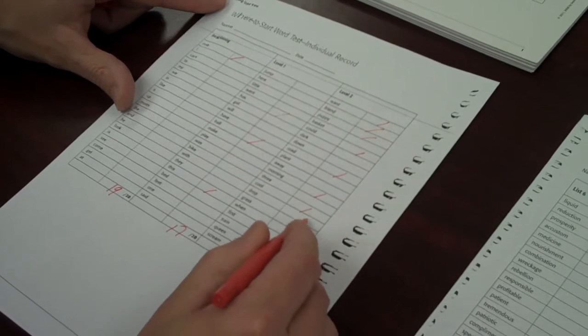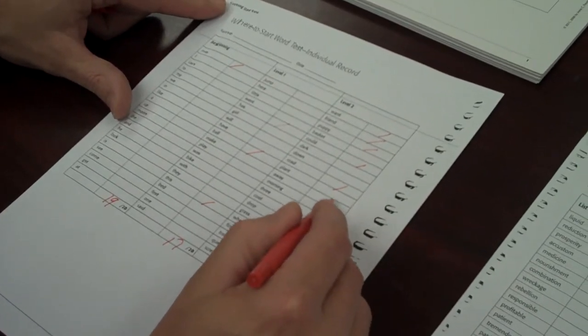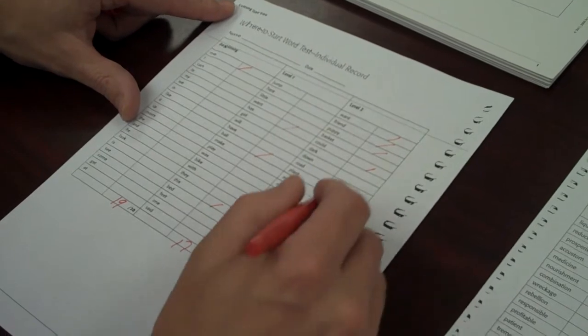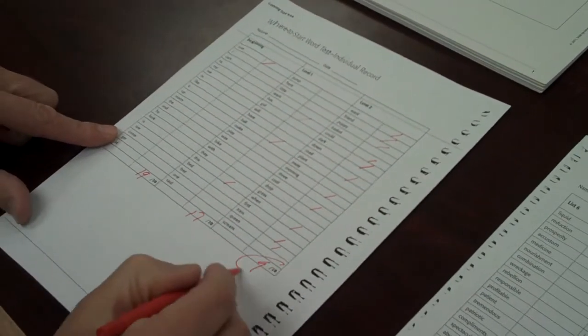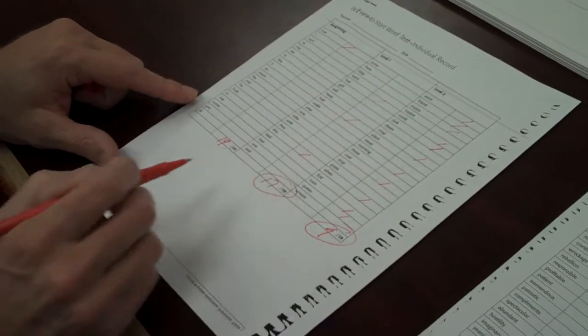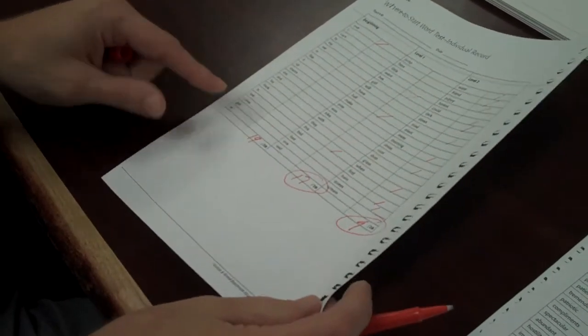So we have 1, 2, 3, 4, 5, 6, 7, 8, 9, 10 correct. We'll miss a couple more and make that 9. So you'd have 9 of 20 and you'd have 17 of 20. So you'd take this information.